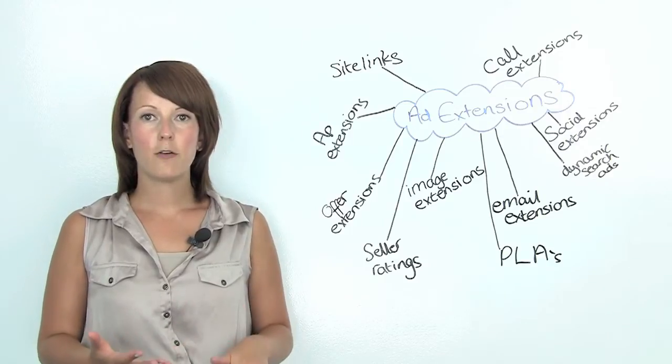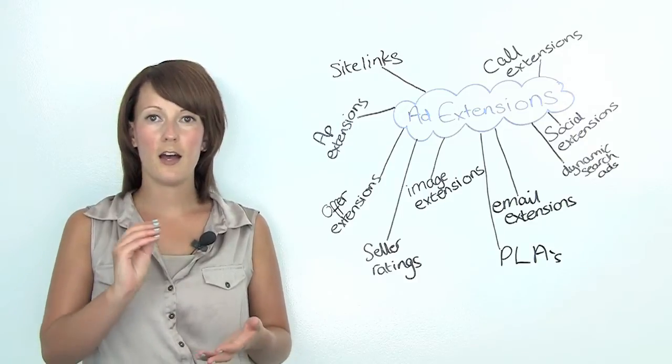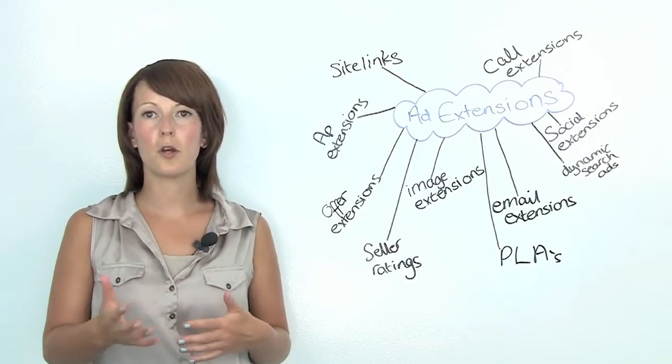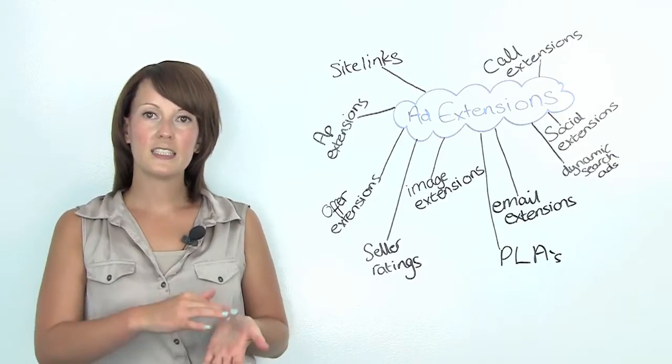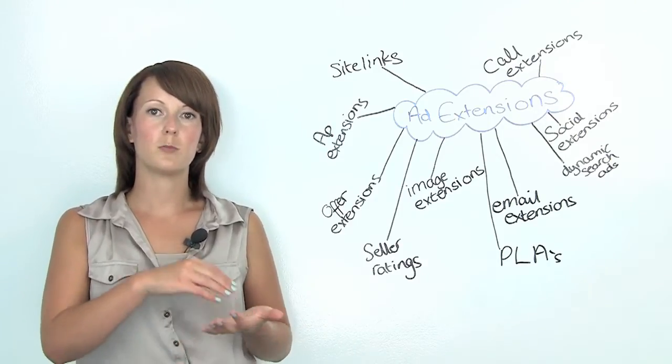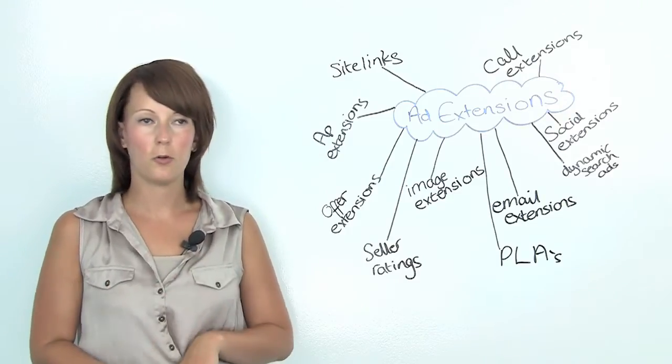This is really helpful if you've got, for example, an e-commerce site, because you can set them at ad group levels. If you've got a product with lots of different colour variations, you can set up your ad extensions at that product level to be specific. You can set up ad extensions for each different colour variation of the product.